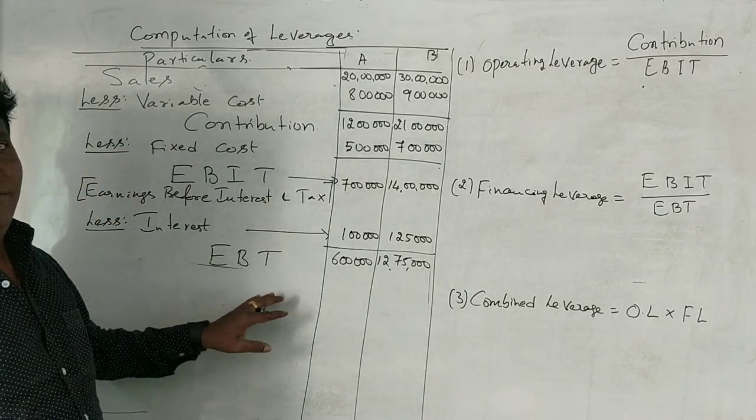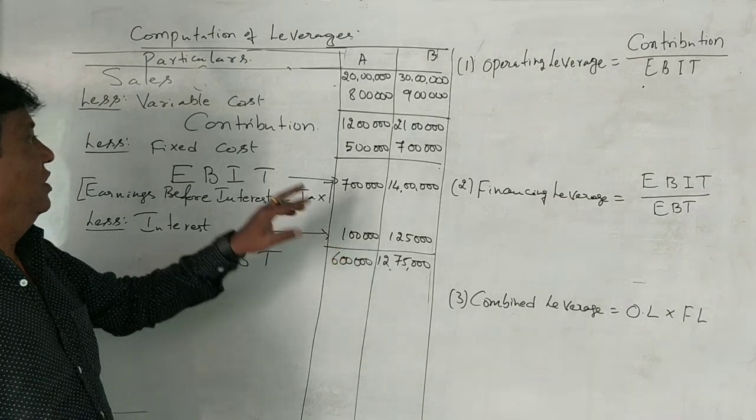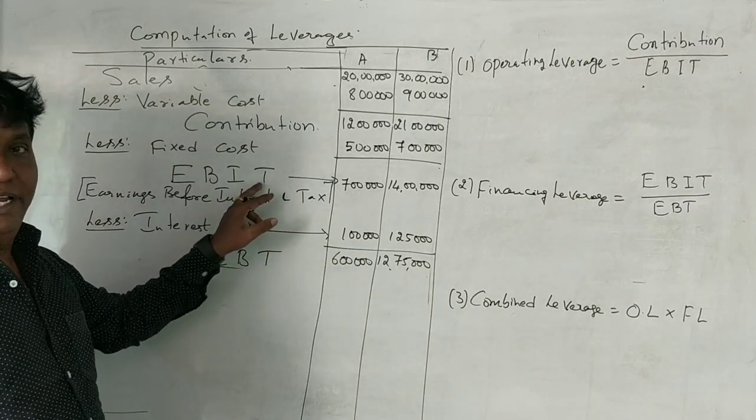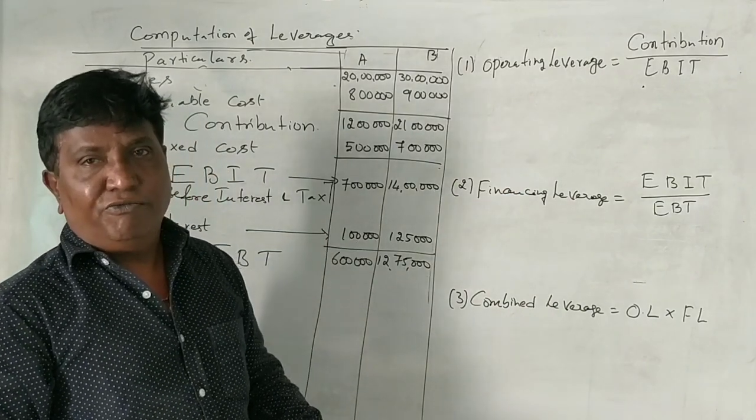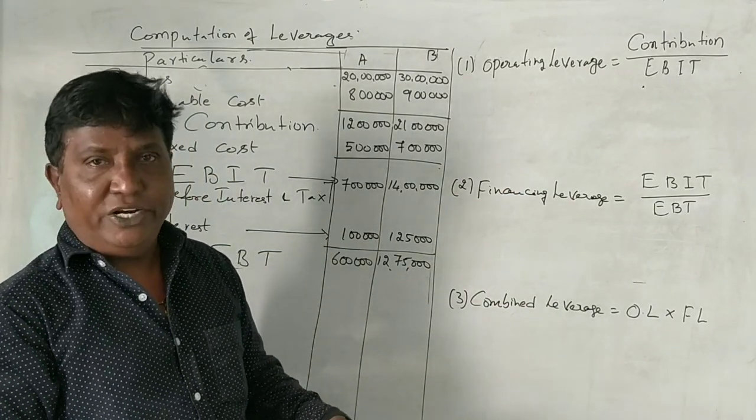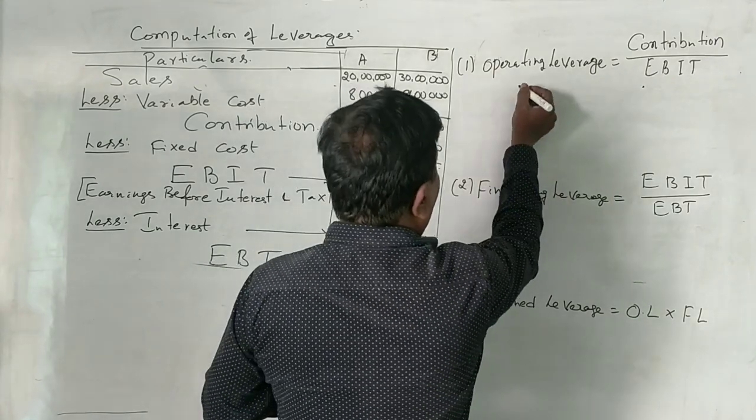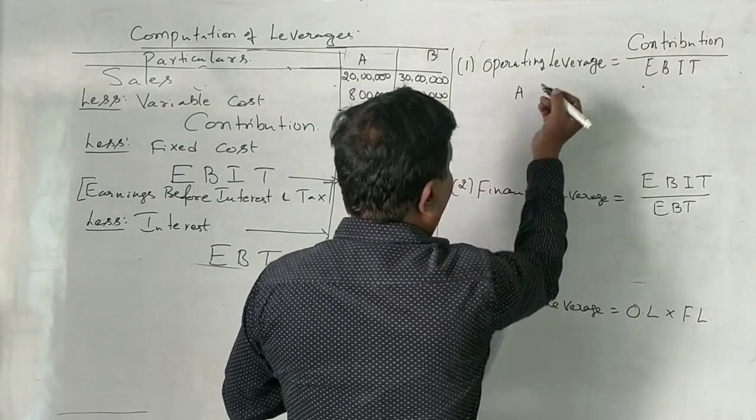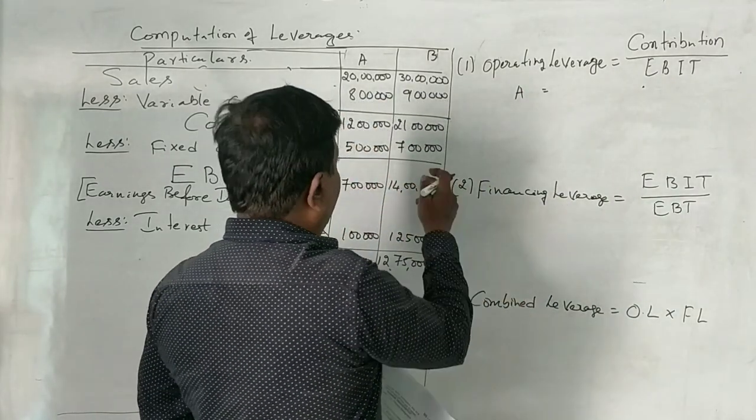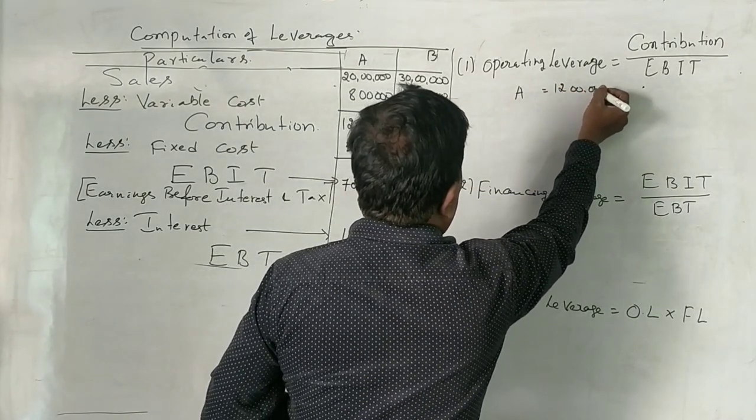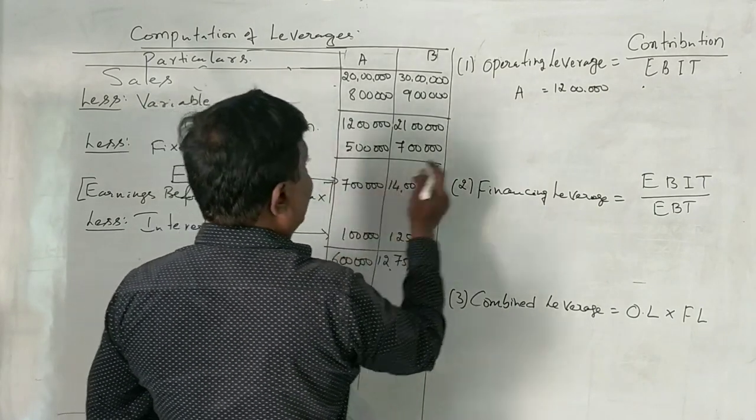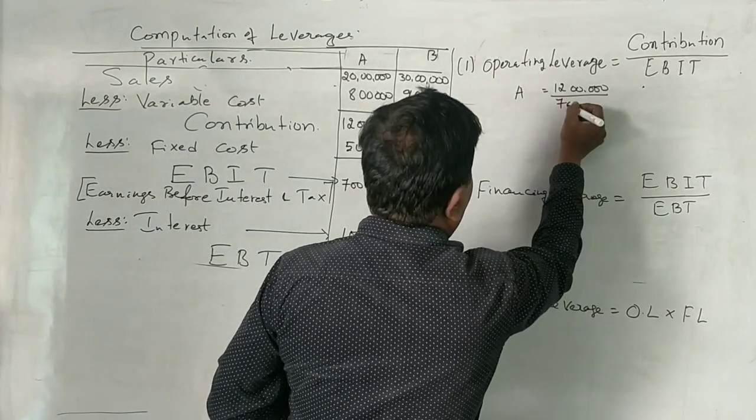Now we have calculated firm A and B's contribution, EBIT and EBT. With the help of the formula, we can easily find out operating and financial leverage. Now let's take firm A. What is the contribution is 12 lakhs. What is the EBIT is 7 lakhs.